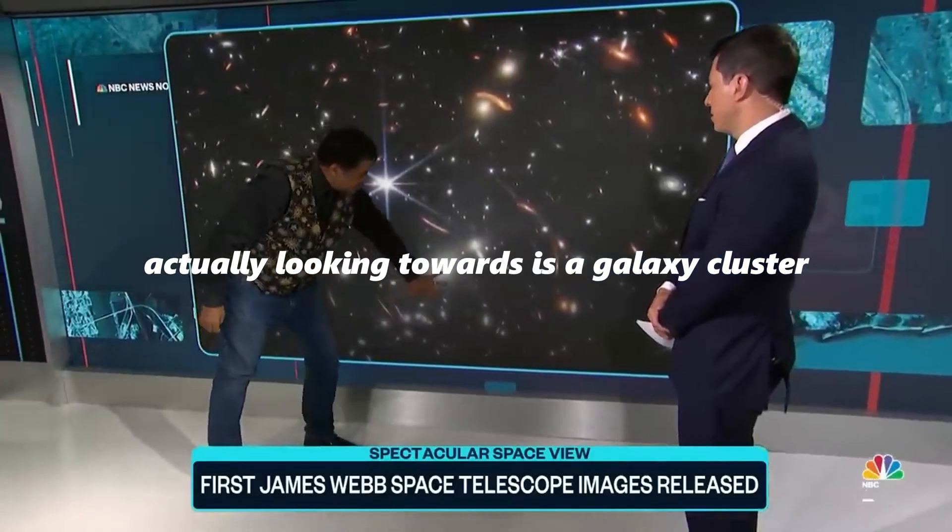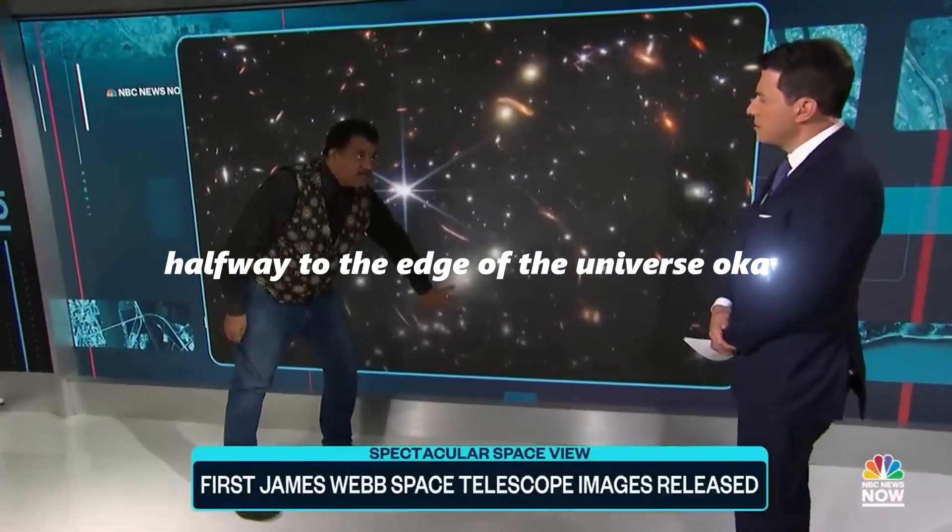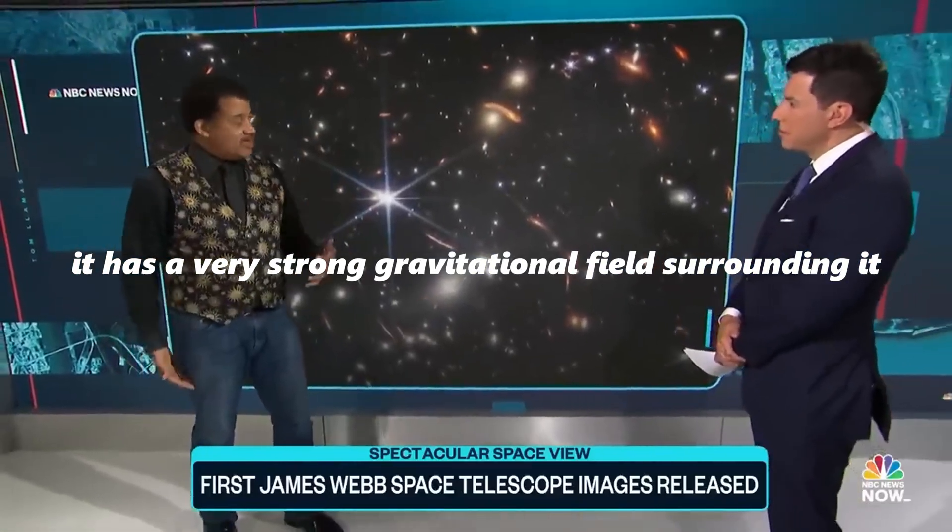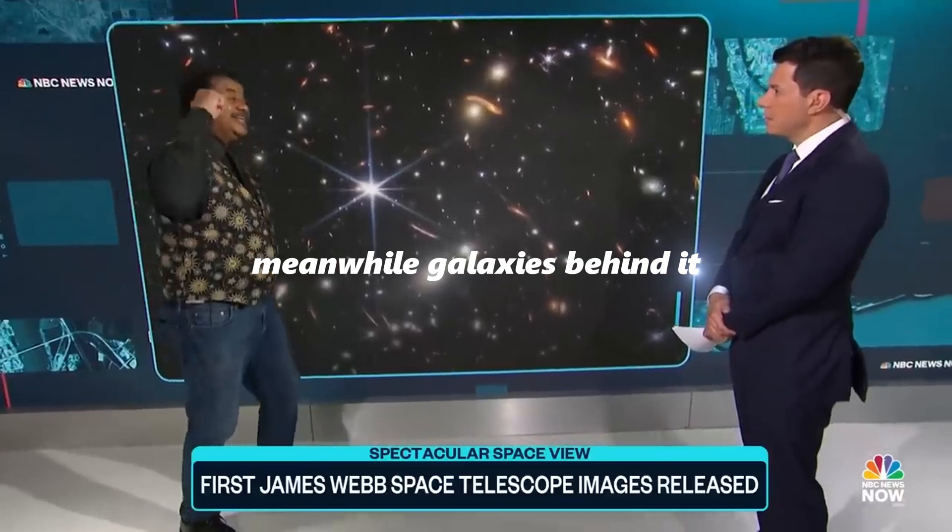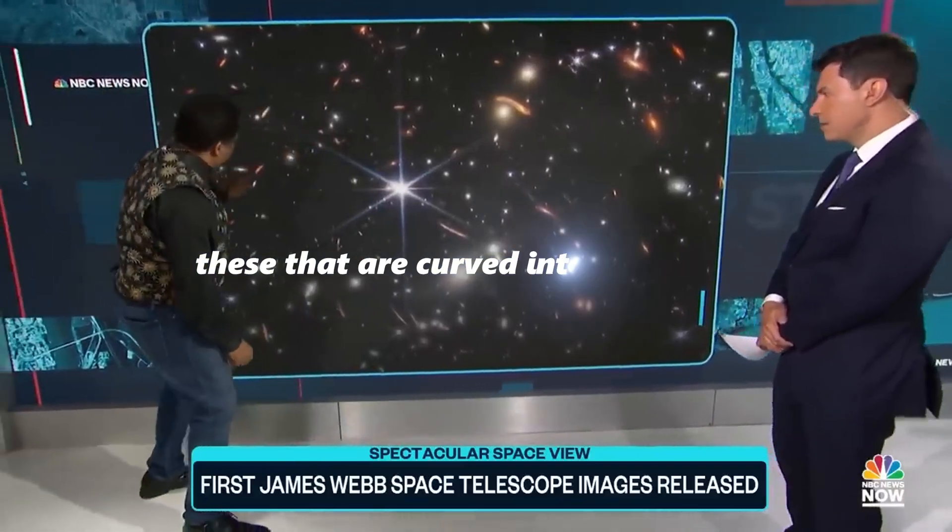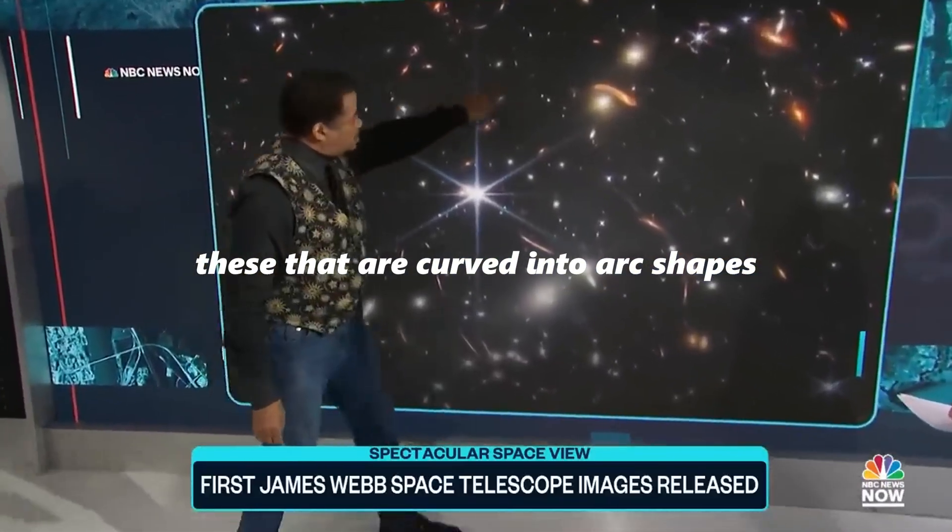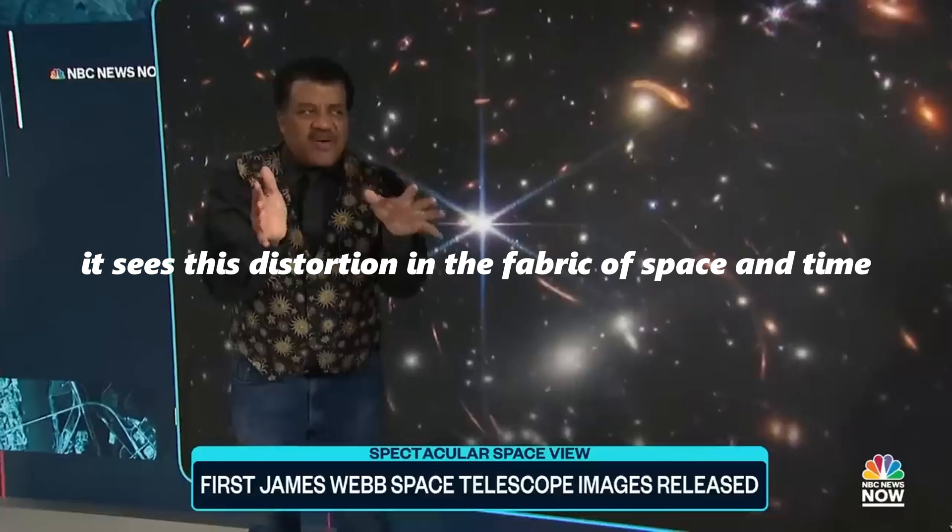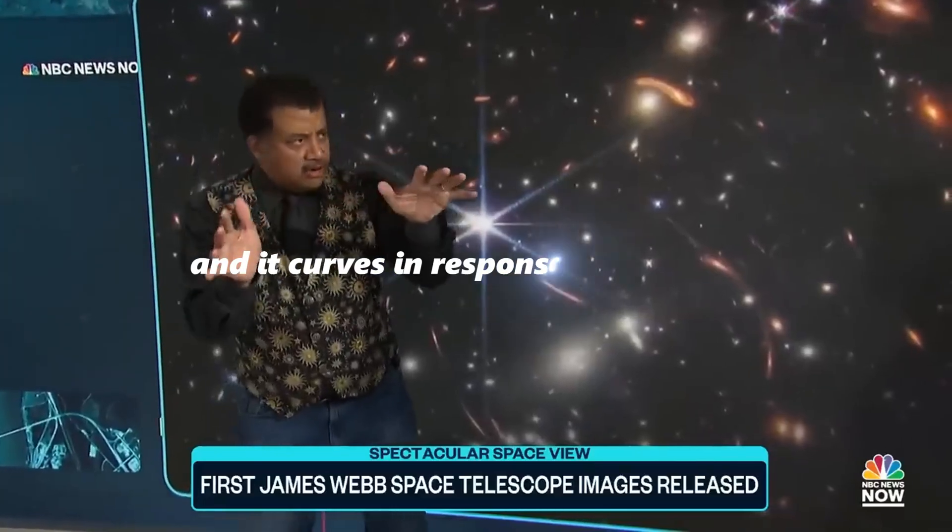We're actually looking towards a galaxy cluster halfway to the edge of the universe. It has a very strong gravitational field surrounding it. Meanwhile, galaxies behind it that are curved into arc shapes are passing through the universe minding their own business. They see this distortion in the fabric of space and time and curve in response to it.